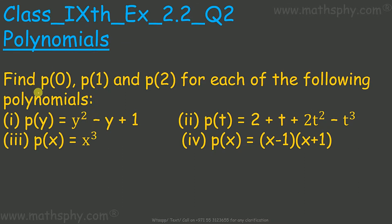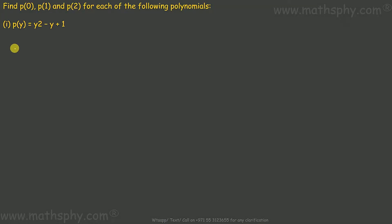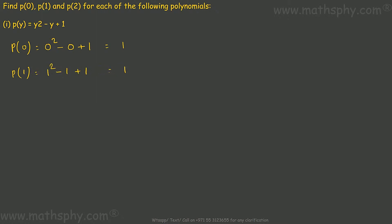This question says: find the value of p when we replace y with 0, 1, and 2. Taking p as 0: 0 squared minus 0 plus 1, which is 1. When p is 1: 1 squared minus 1 plus 1, which is 1. When p is 2: 2 squared minus 2 plus 1, which is 4 minus 2 is 2, plus 1 is 3.